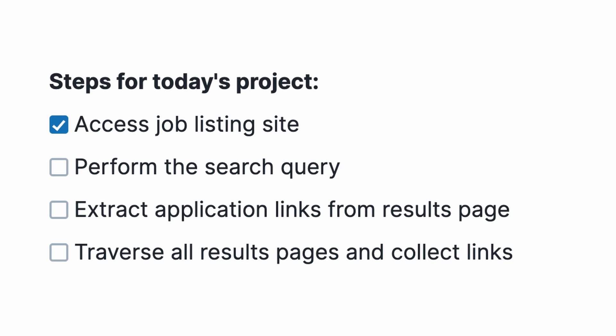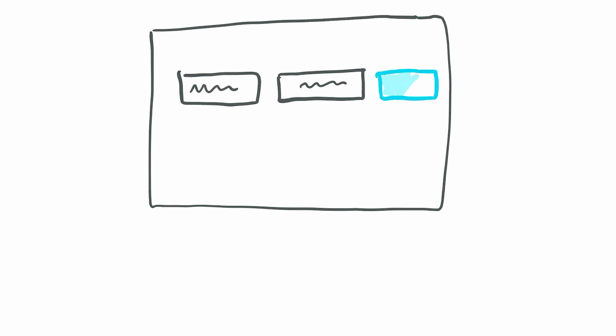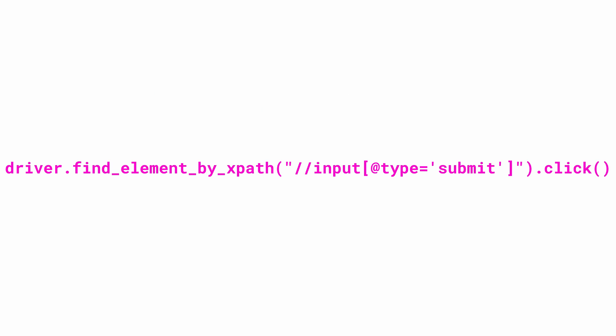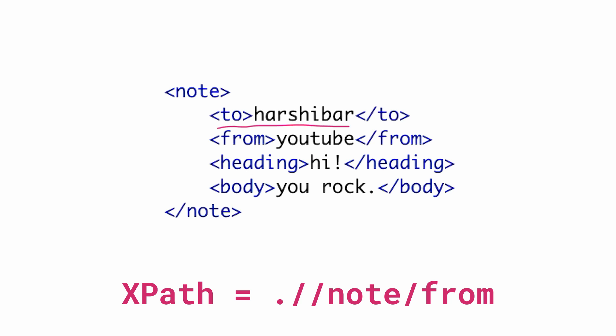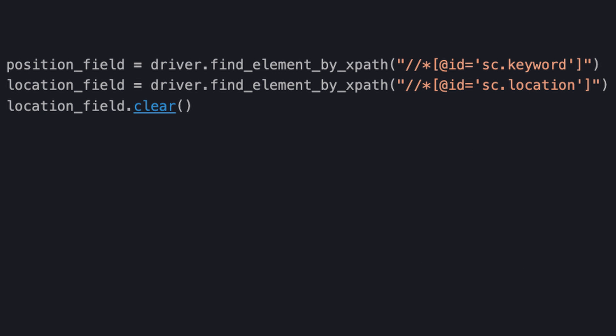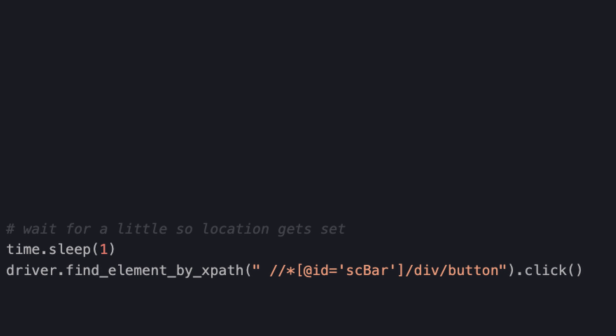Now that we're in, it's time to perform the job search itself. With Selenium, our general process is to look for an element on a page and then do something with it. I've found that the easiest way to do this is to search for elements by XPath, which is a query language for selecting nodes from an XML document or an HTML page. To perform the query, we just find the text fields for position title and location, fill in the fields, and click submit.